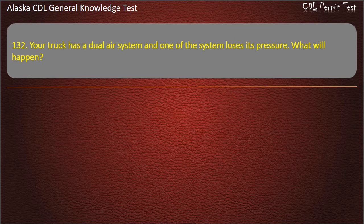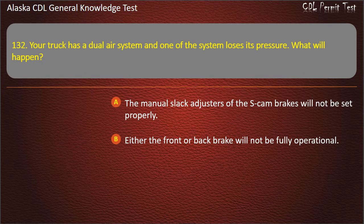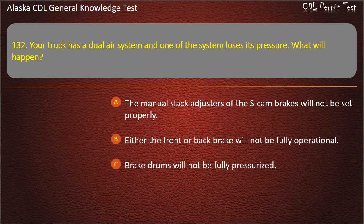Question 132. Your truck has a dual air system and one of the systems loses its pressure. What will happen? The manual slack adjusters of the S-cam brakes will not be set properly; either the front or back brake will not be fully operational; or brake drums will not be fully pressurized. Answer: Either the front or back brake will not be fully operational.